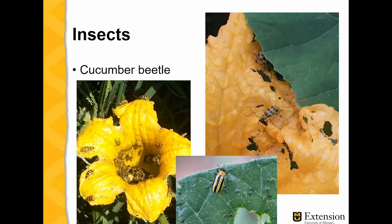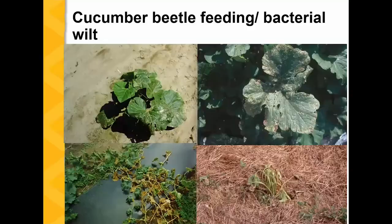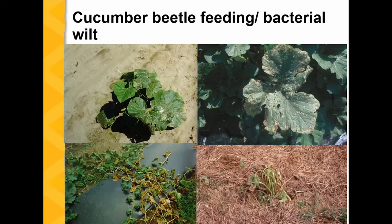One of the reasons cucumber beetles are extremely important to control is that not only do they cause feeding damage, they can also carry a disease called bacterial wilt. These plants at the bottom were infected with bacterial wilt, and once they are infected with that disease, they cannot be saved — you need to remove them from the patch. That's why cucumber beetle control is extremely important, because it only takes one to carry a disease problem around.